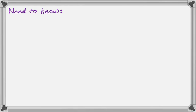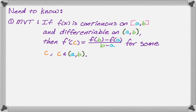So there are really three things — I forgot to write one of them down. The first thing is you need to know the mean value theorem. It says: if f(x) is continuous on the closed interval [a, b] and differentiable on the open interval (a, b), then f'(c) equals f(b) minus f(a) over b minus a, for some c on the open interval (a, b). So it's saying the slope of the tangent line will equal the slope of the secant line somewhere on the interval. The big requirements are: continuous on the closed interval, differentiable on the open interval.